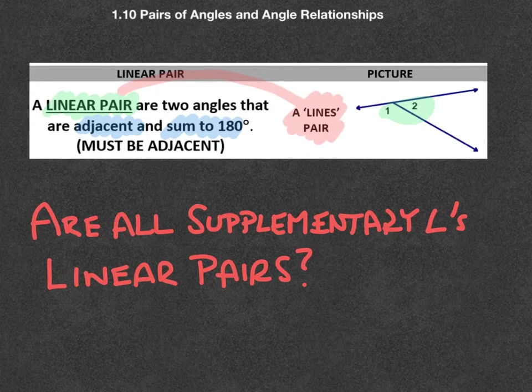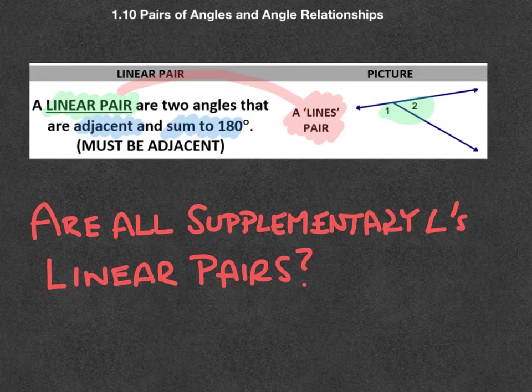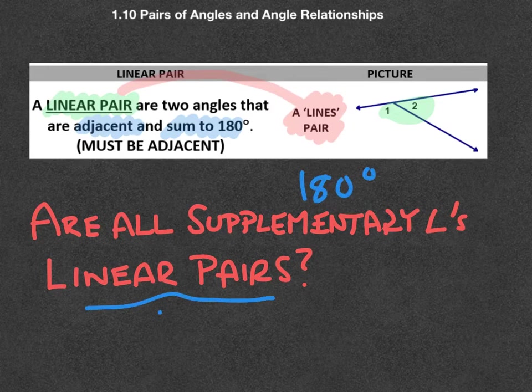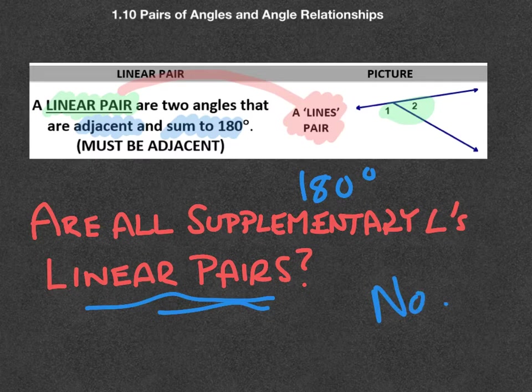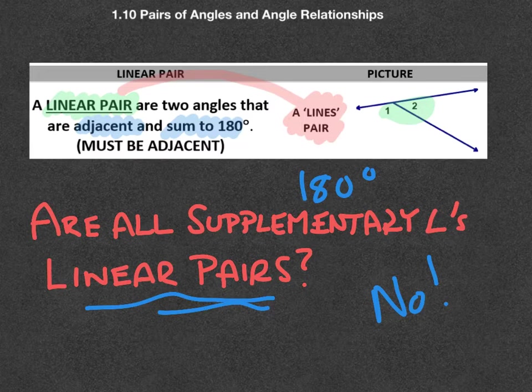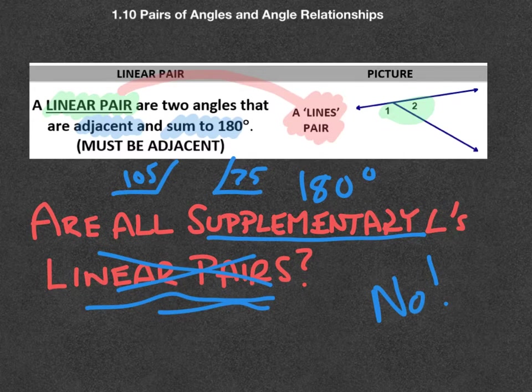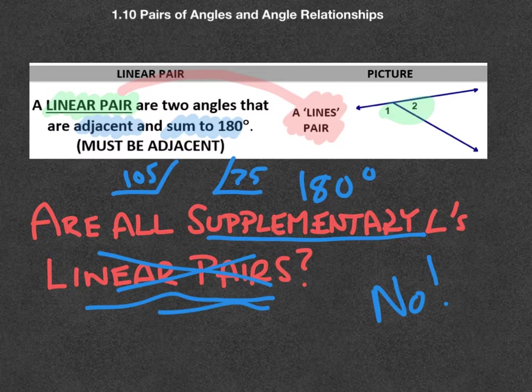A common question that gets asked about these is this one here. Are all supplementary angles linear pairs? That means are all angles that add to 180, are they linear pairs? And our answer is no. The reason it's no is because you can be a supplement and not be adjacent to each other. If I have an angle of 105 like the other example, an angle of 75, these are supplement, but they are not a linear pair. In reverse, it is true, all linear pairs are supplements because every linear pair does add to 180.